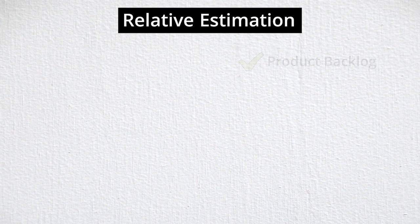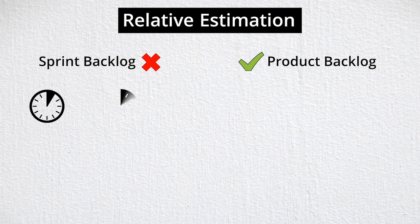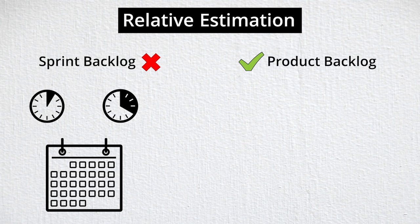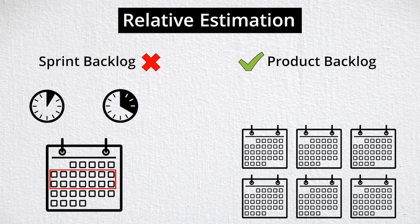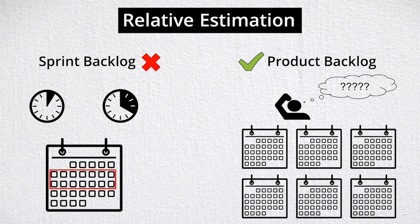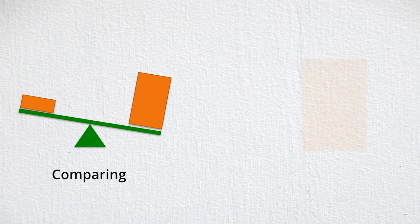Relative estimation is applied at a product backlog level rather than at a sprint backlog level. Sprint backlog items can be estimated in traditional time units such as hours or half-day blocks, primarily because the period of time being estimated for is a single sprint, which is a matter of days rather than months. On the other hand, the product backlog may collectively represent many months of work, making time-based estimation very long and laborious.